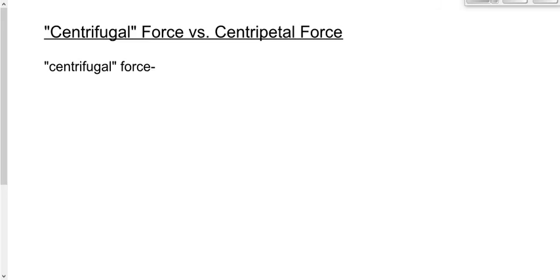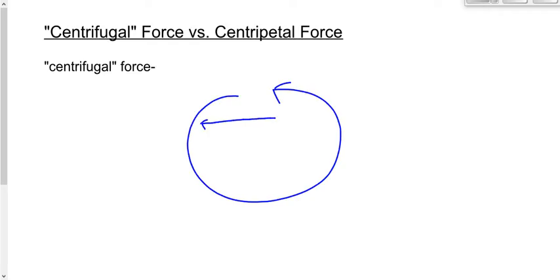Yesterday we talked about centrifugal force — that non-existent force that we feel pushing us outward toward the outside of a circle. It doesn't really exist. Why do we feel it? It's just inertia. You want to go in a straight line, so as you're going around the circle, you continue in a straight line, and by the time the wall comes around to that spot, you end up against the wall. So it feels like you're being pushed outward, but really you're just going in a straight line and the wall catches up with you.